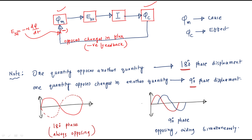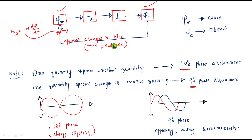So this is about the transformer as a negative feedback device. Why is it called a negative feedback device? This is the total explanation of that justification — transformer is referred to as a negative feedback device. Thank you.